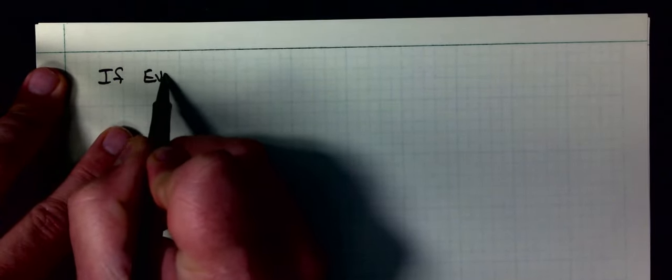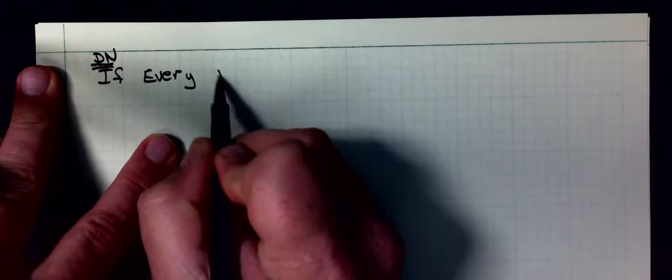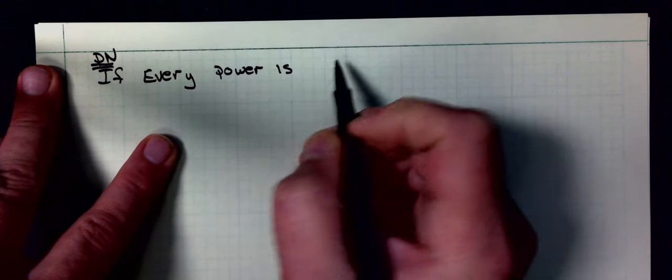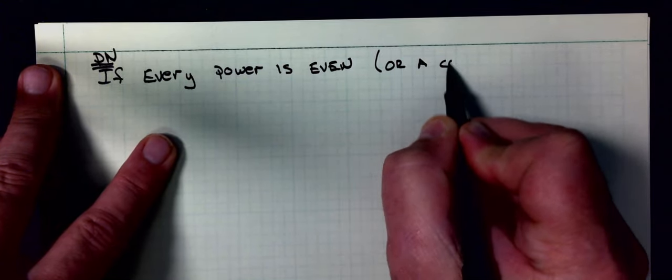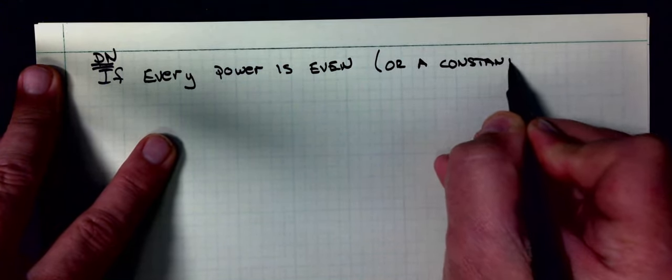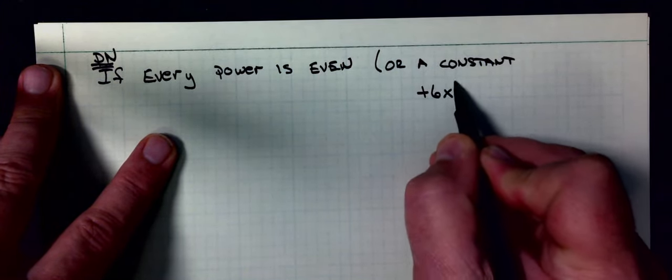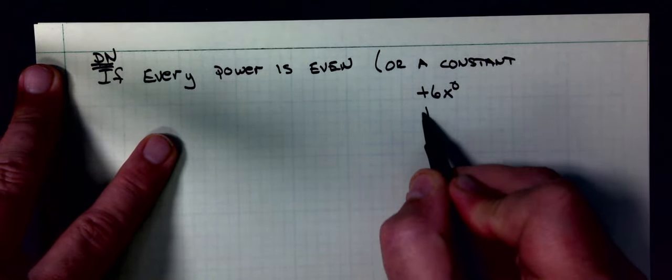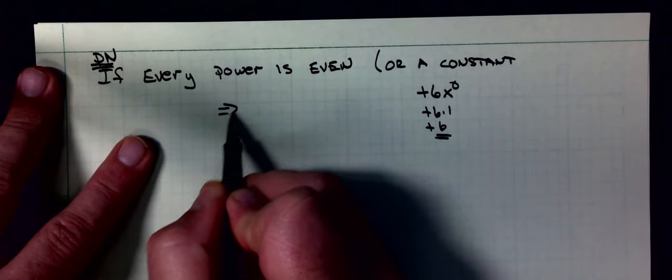Now shortcuts here: I'm talking polynomials. If every power is even, you have a constant. For example, that +6 that we had on the first example, I could think of that as +6 times x^0. x^0 is 1, which is +6 times 1, which is 6. That's what I mean by the constant. If every power is even, your function is even.